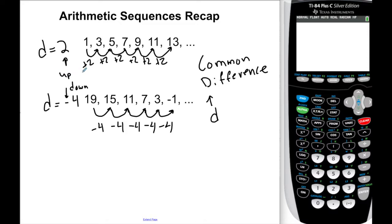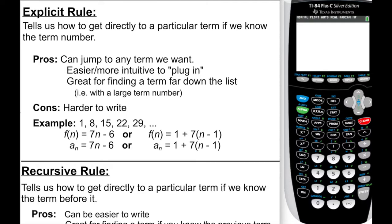An explicit rule tells us how to get directly to a particular term if we know the term number. Here I have the example 1, 8, 15, 22, 29. These are the terms. The term numbers are 1, 2, 3, 4, 5, and so on. So term 1 is 1, term 2 is 8, term 3 is 15, term 4 is 22, term 5 is 29, and the ellipses mean it continues to go up by the same amount.